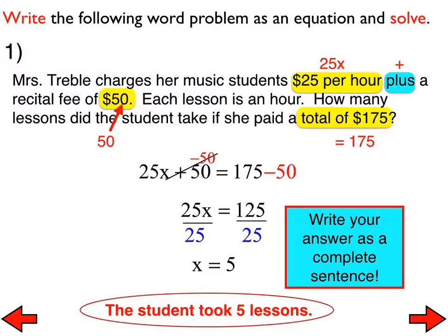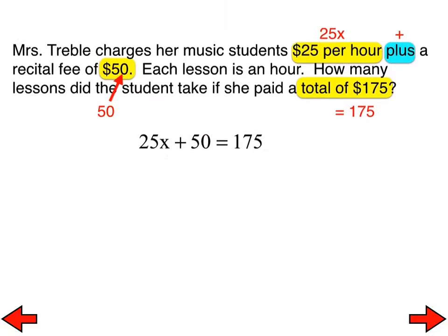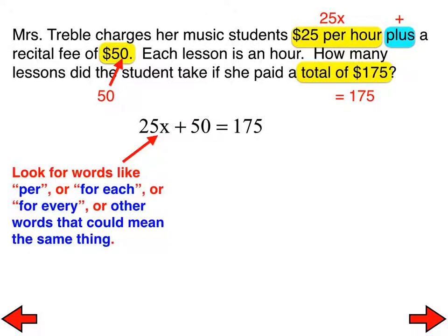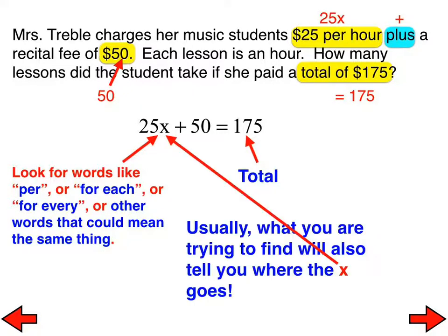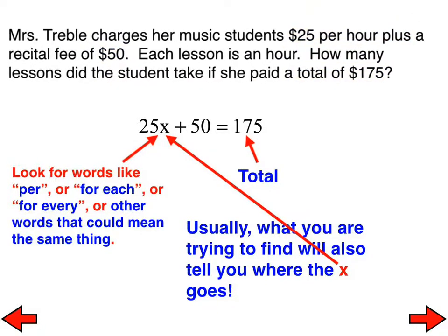All right. Let's take a look at number 2 in just a second. I want to make some other points here. Look for words like per or for each or for every or other words that could mean the same thing because that usually indicates where the variable has to go. So the total typically always goes on the right-hand side of your equation, and usually what you're trying to find also tells you where the x needs to go because in this one we were trying to figure out how many lessons, and it was $25 per hour, which means $25 per lesson. All right.